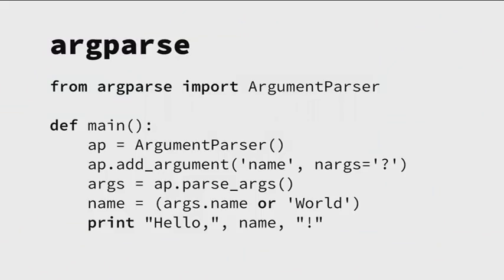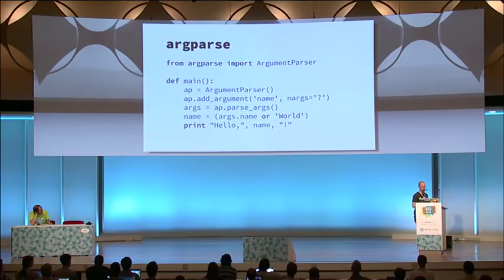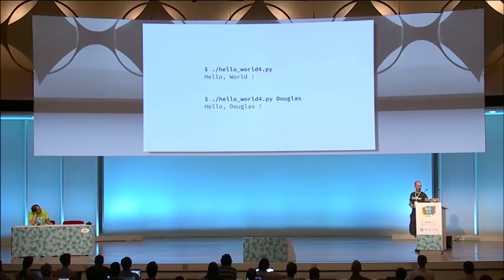I'm sure we've all used argparse, so I won't spend a lot of time on it. You instantiate an ArgumentParser, then tell it about all the arguments you expect — some compulsory, some optional. When you finish, you call parse_args. It talks to sys.argv, extracts the arguments, works out which flags correspond to which values, and hands you back a namespace object containing the extracted values. If somebody provides an invalid value, it prints out the help text and finishes with an error code of one. Here we've got an optional parameter called name — if it's not provided, we replace it with 'world', and it prints 'hello' and the value of name.